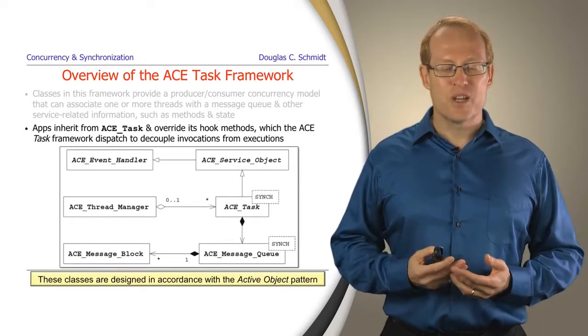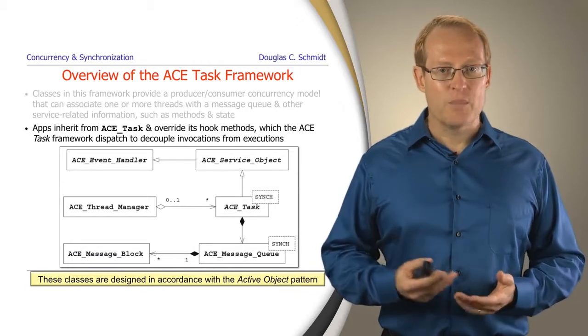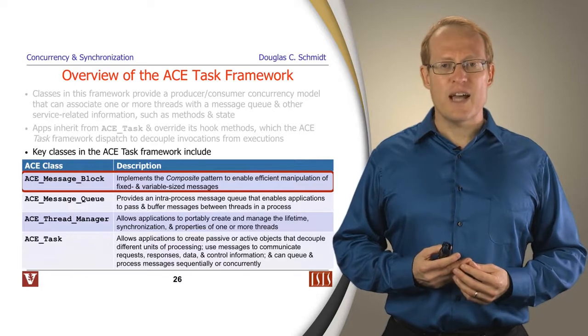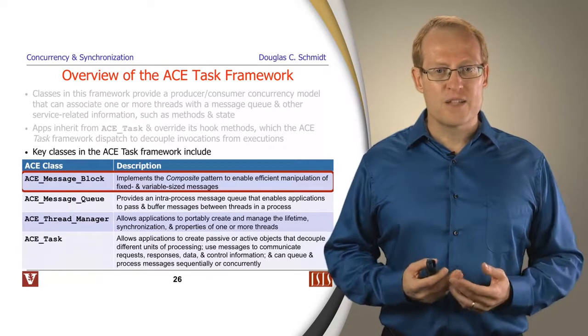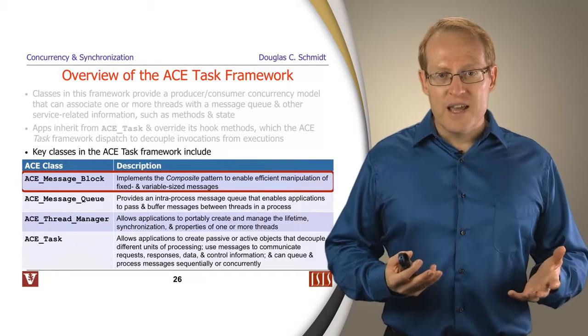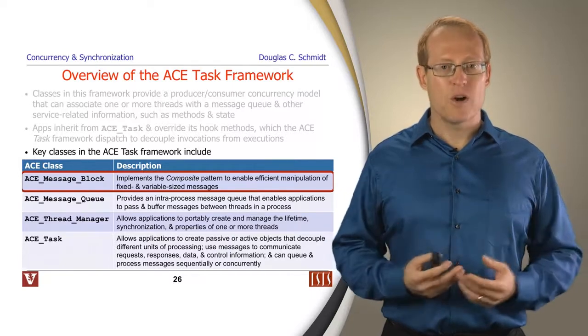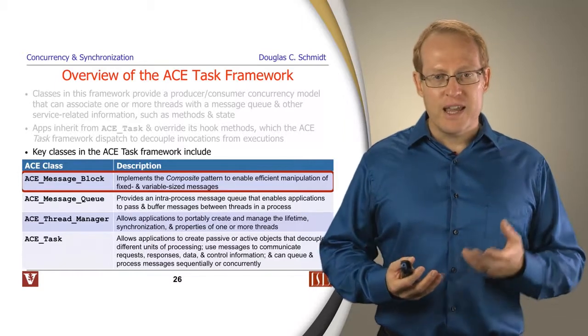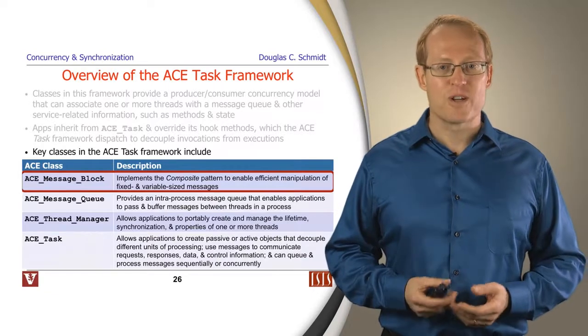Naturally the classes in this particular framework are guided in part by the active object pattern and related patterns. Let's talk about some of the various classes that are part of the ACE task framework. One of the first classes we'll discuss is the ACE message block, which is essentially a composite that allows you to put together messages made out of building block parts that can be chained together for various types of efficient encapsulation and de-encapsulation of messages that may end up flowing across networks.